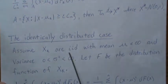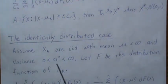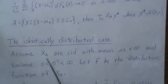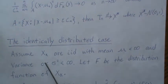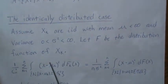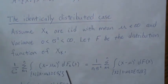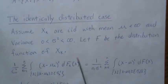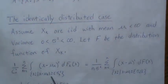Let's assume the X_k are iid — independent identically distributed — with finite mean and finite variance, and let F be the distribution function of X_k. One important note: it doesn't say X_k is continuous or discrete. The condition is written using a capital dF, which is the Riemann-Stieltjes integral — a notation that handles both discrete and continuous cases. I plan to do a dedicated video on that.